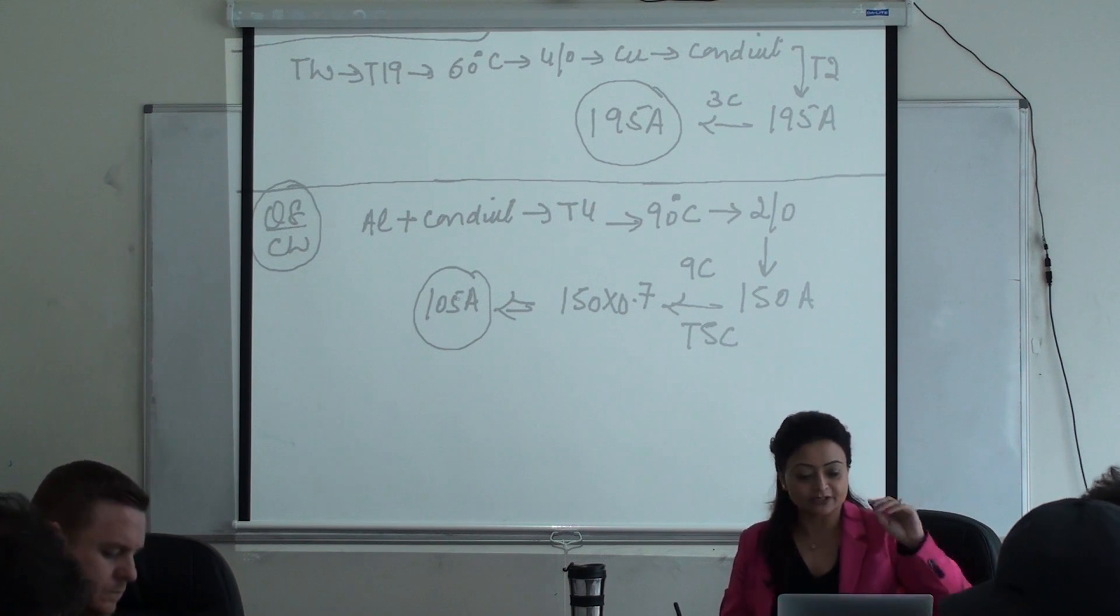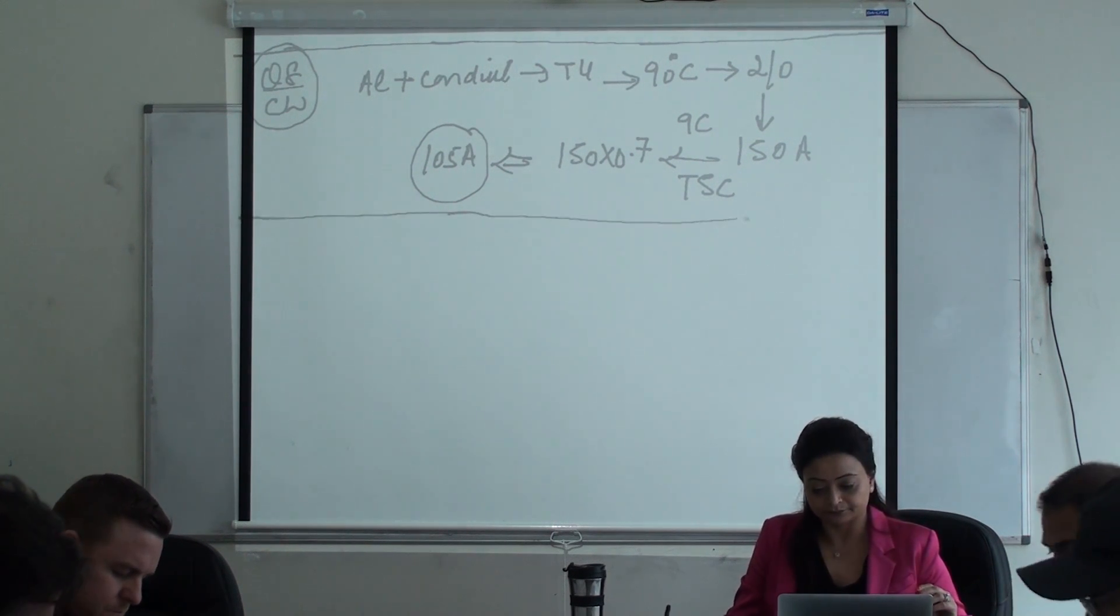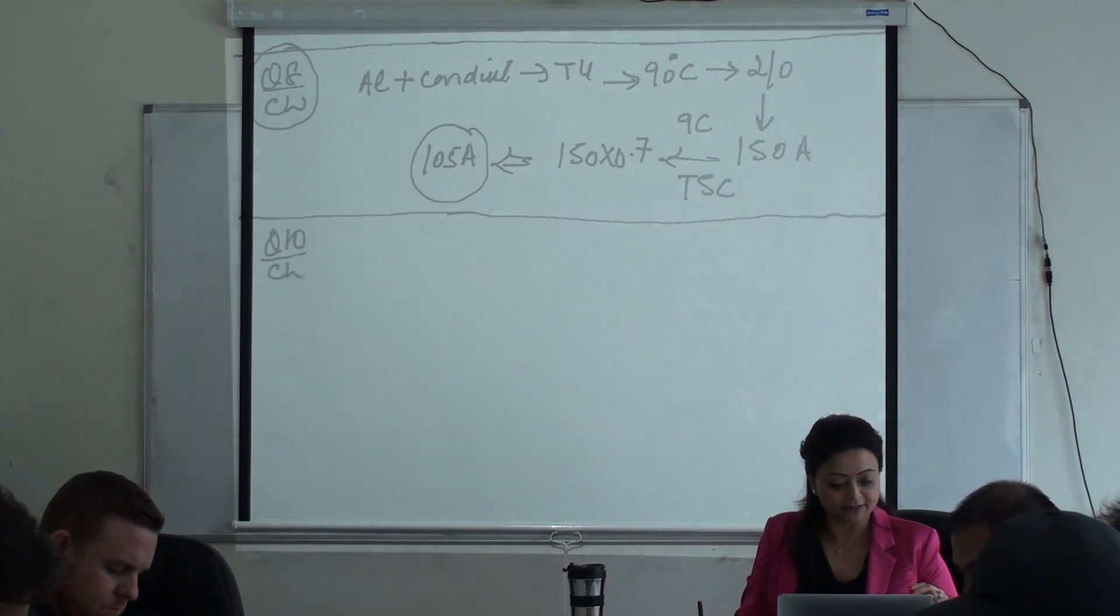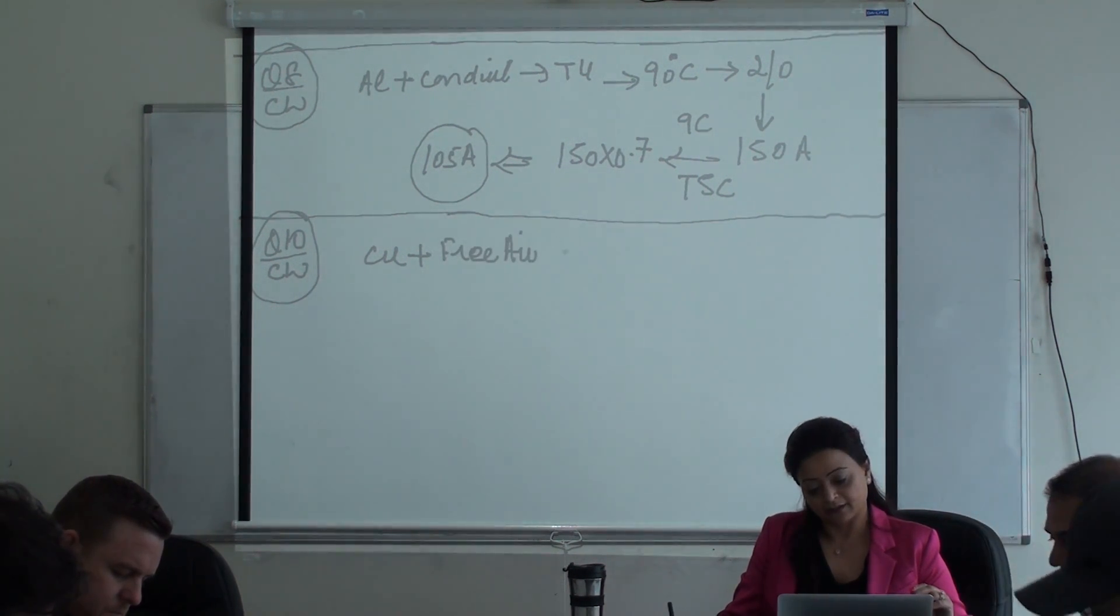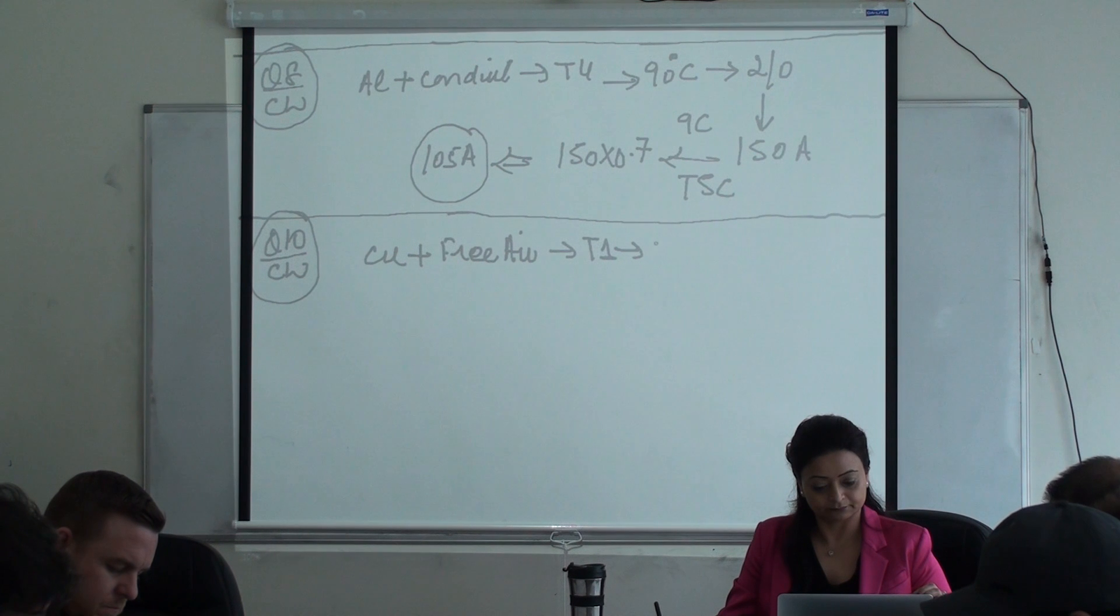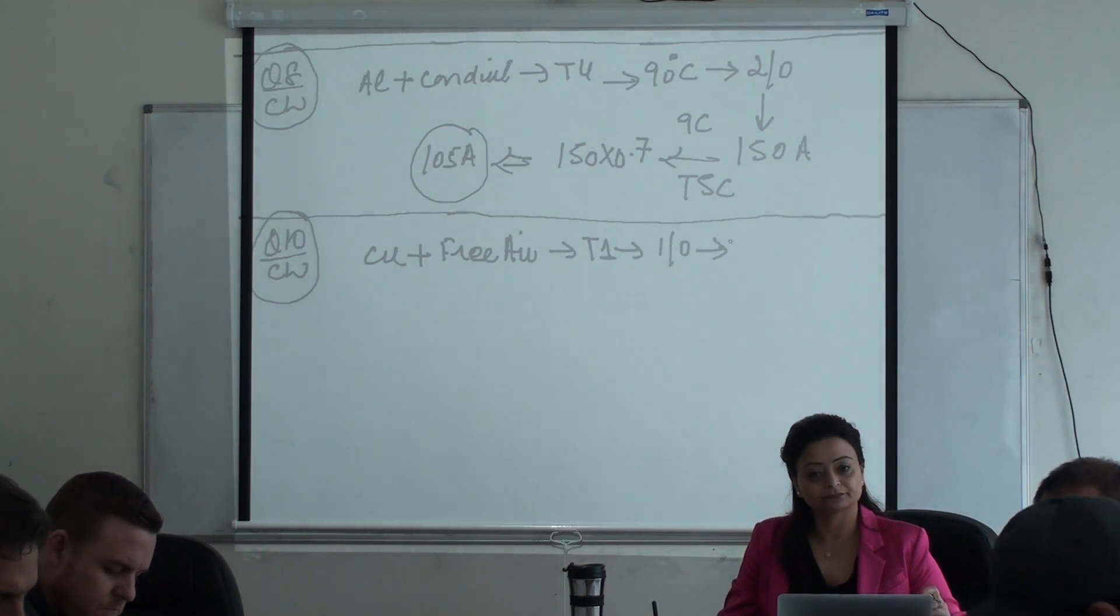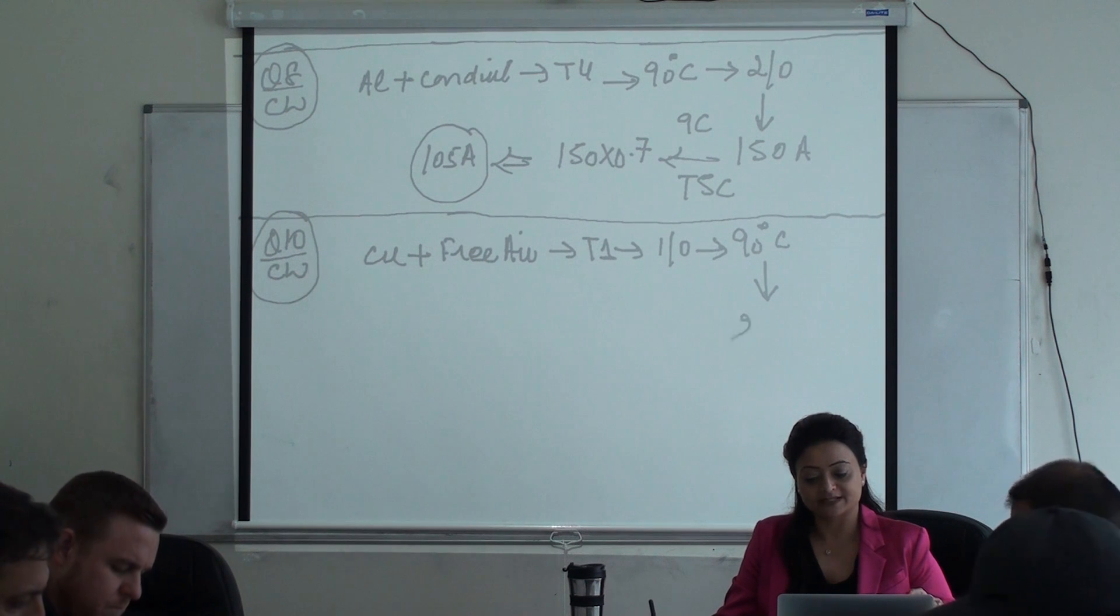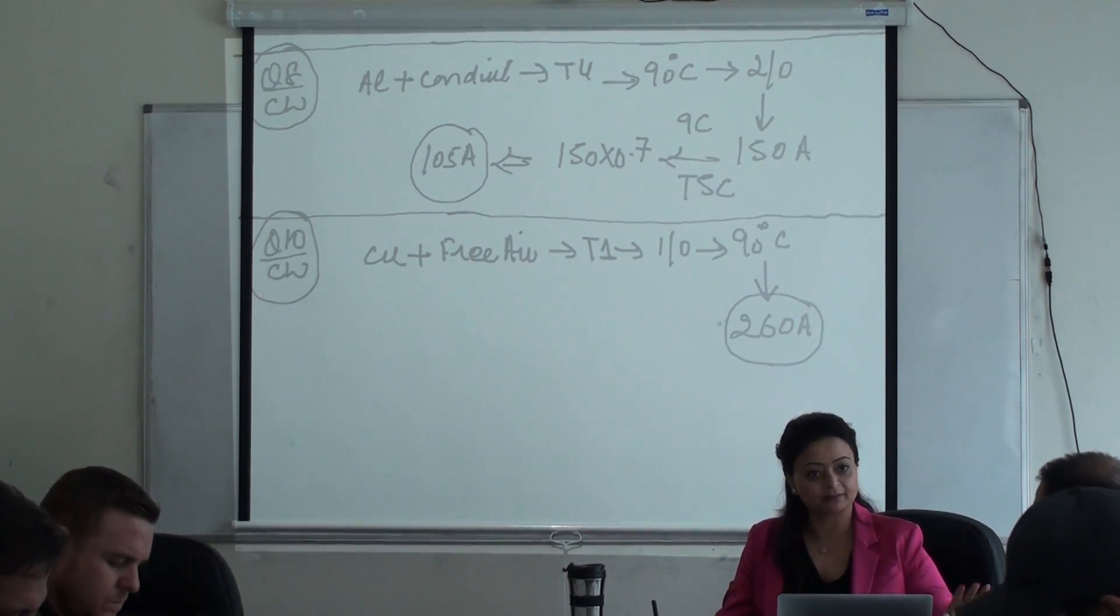Next question, number 10. Copper or aluminum? Copper. Free air or conduit? Free air. So we stick to our table one. What's the conductor size given here? One zero. And 90, 75, or 60 column? What is the degree C? 90 degree C. Perfect. Based on table one, how many amps? 260. That's it, no more information. Are we done?